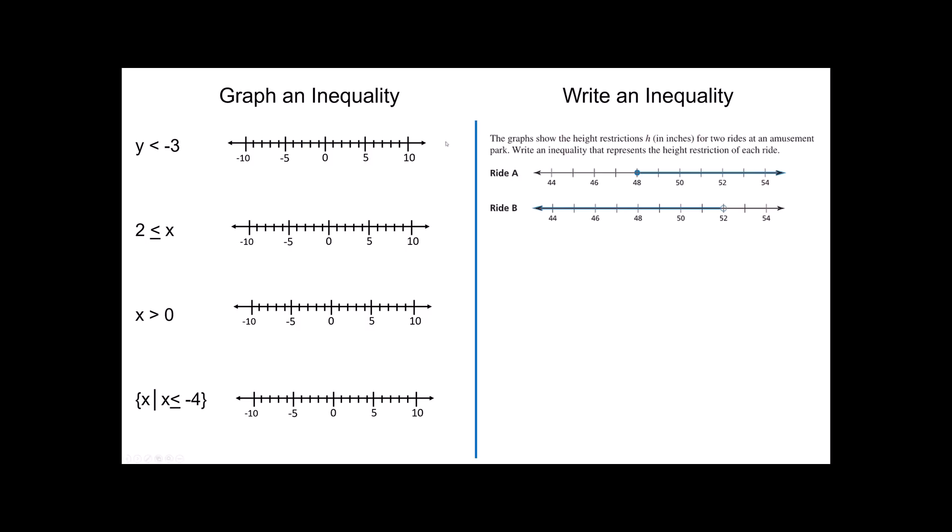Over on the left side, take just a second and see if you can graph these. I'd suggest pausing your video to do that and then restarting when you're ready to see if you're right. Y is less than negative 3. There's things that are less than negative 3. It's an open circle, so we know that negative 3 is not less than itself. When I see 2 is less than or equal to x, to me, it's easier to read this with the x on the other side. If 2 is smaller than x, that tells me that x is greater than 2. Notice we have an equal sign as well. Here's the things that are greater than 2. There's the 2 itself. How about x is greater than 0? There's the things that are greater than 0. 0 is not greater than itself.